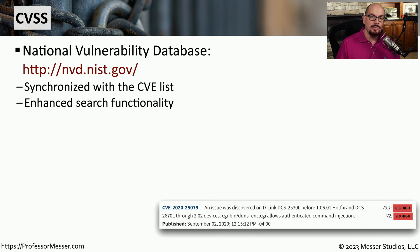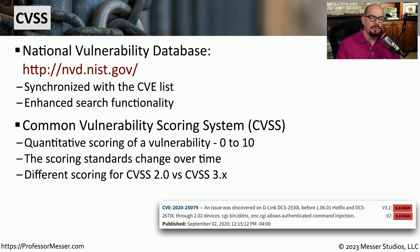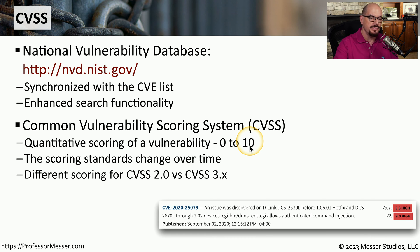If you'd like to see one of these scoring systems, they are available in the National Vulnerability Database at nvd.nist.gov. This list of vulnerabilities is synchronized with the main CVE list, and you can search through to find exactly what you're looking for. Each vulnerability in this list is assigned a score — we refer to this as the Common Vulnerability Scoring System, or CVSS. Each vulnerability has a score between 0 and 10, where 10 would be the most critical. These scoring systems have changed over time, so there will often be multiple scores available with the version number of the scoring system.